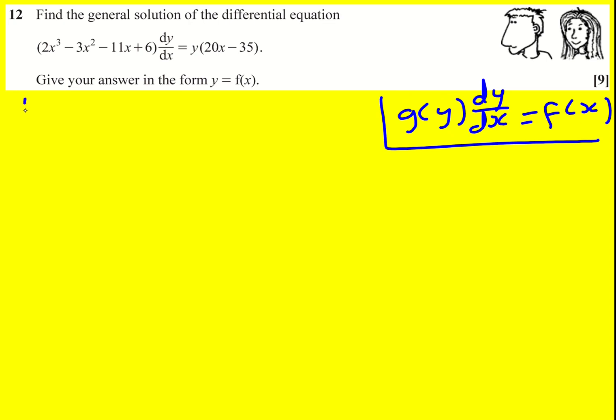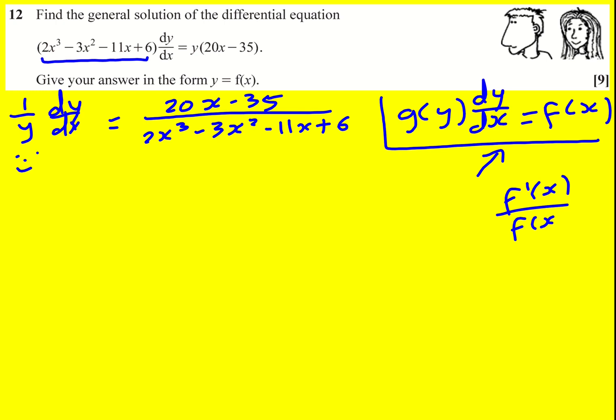So we can divide through by y, get one over y dy by dx and also divide through by this cubic function. Okay, we don't actually have a choice, we need to do that to get it in this form here. Now it's worth immediately thinking can we integrate one over y, which we can, but can we integrate this thing on the right, which at present we can't. So it's not in the form f dash x over f of x, that's like a classic thing to look for when you've got a fraction, but nope.